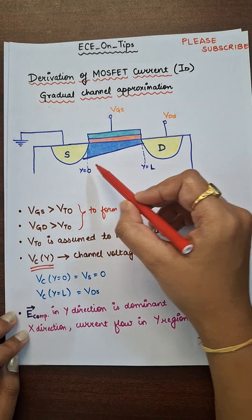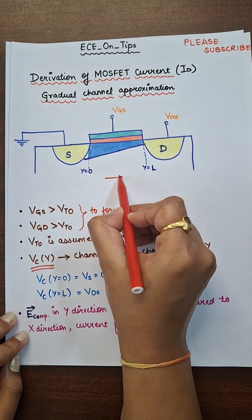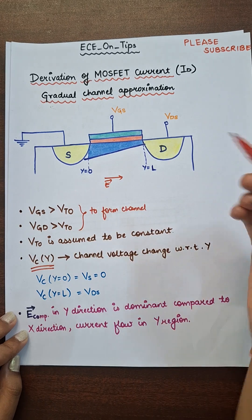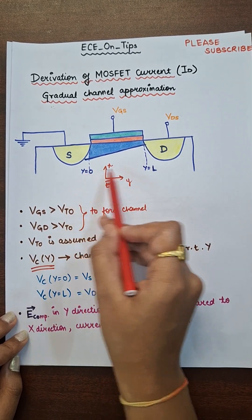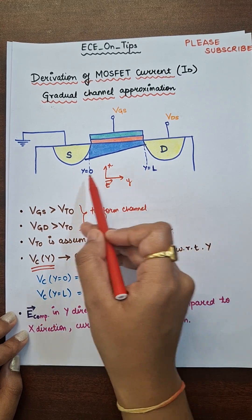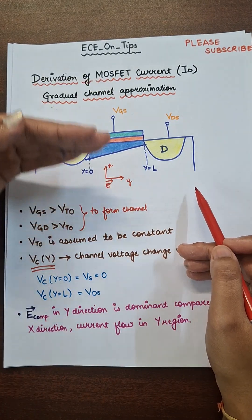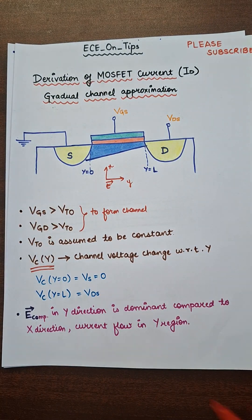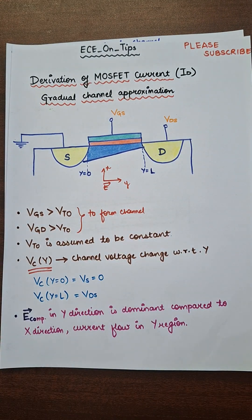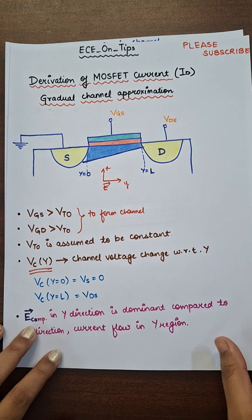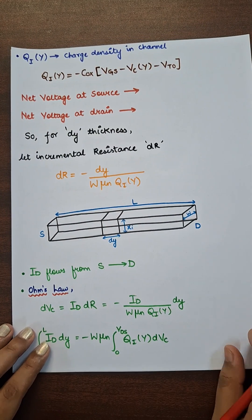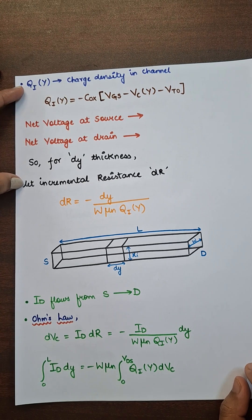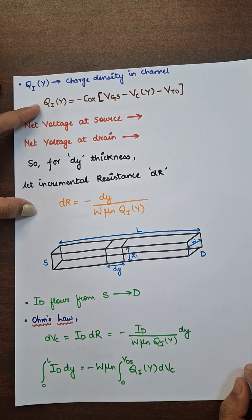The electric field component in the y direction will be dominant compared to the x direction, because the variation in the electric field is greater in the y direction. Therefore, the current will flow from y equal to 0 to y equal to L, since the electric field component is more dominant in the y direction.